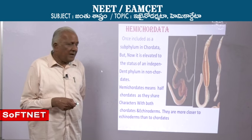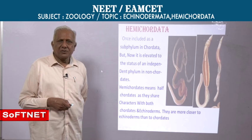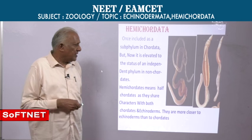Balanoglossus has two common names: acorn worm and tongue worm. These are the two examples given in the textbook.